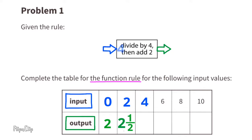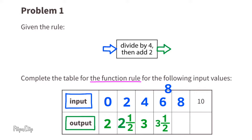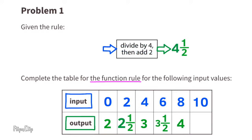Four divided by four is one. Eighteen divided by four is two. Two plus two is four. Ten divided by four is ten-fourths, or two and a half. Two and a half plus two is four and a half.